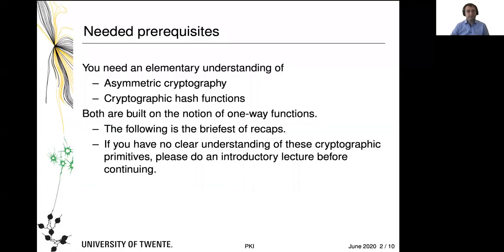You are going to need prerequisites. You need an elementary understanding of asymmetric cryptography, sometimes also called public key cryptography, and one for cryptographic hash functions. Both concepts are actually built on the notion of one-way functions — interesting mathematical functions that we believe to exist and have certain properties. There is no proof that they really exist, and that our candidate functions really are one-way functions, or in the case of public key cryptography, an extension of one-way functions called trapdoor functions.